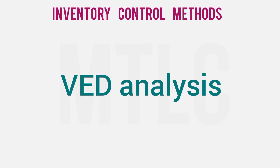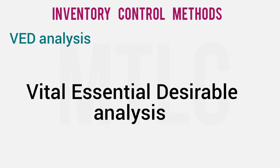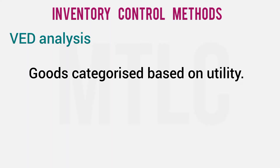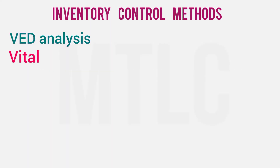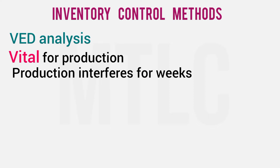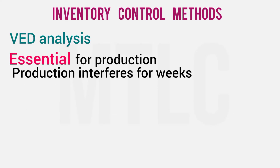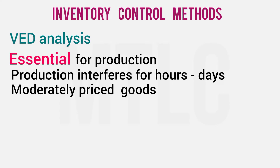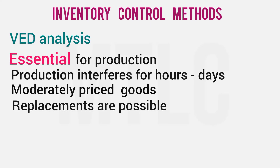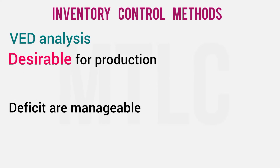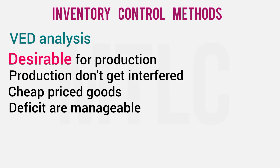VED Analysis is Vital, Essential, Desirable Analysis. It is based on the utility of materials. Vital materials are essential to production — if they are not available, production stops entirely and they cannot be replaced easily. Essential materials — if absent, production stops for one or two days; they are not as costly and can be replaced. Desirable materials — their absence is not critical and production can be managed without them.